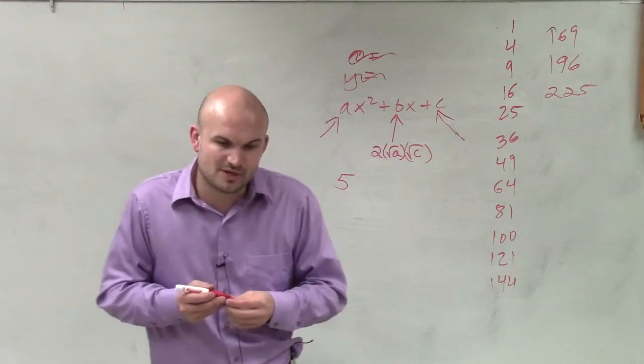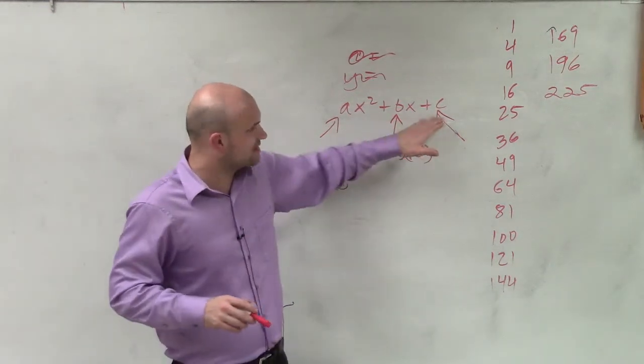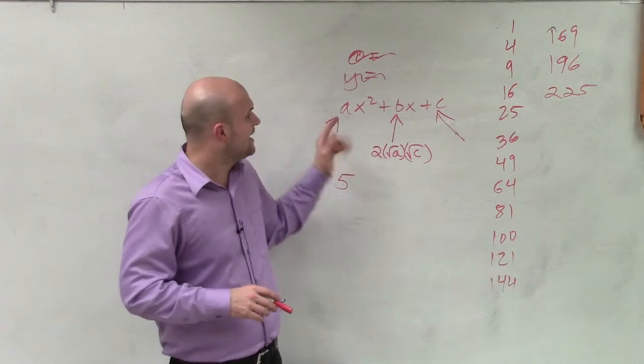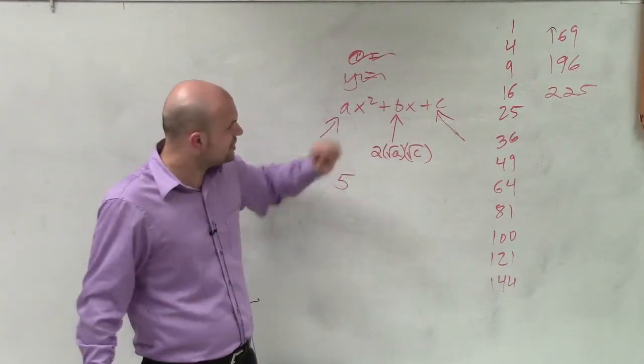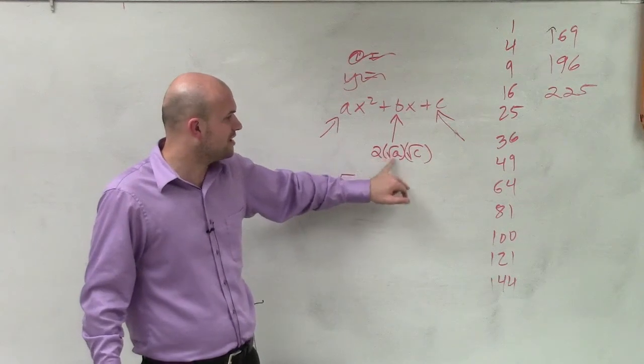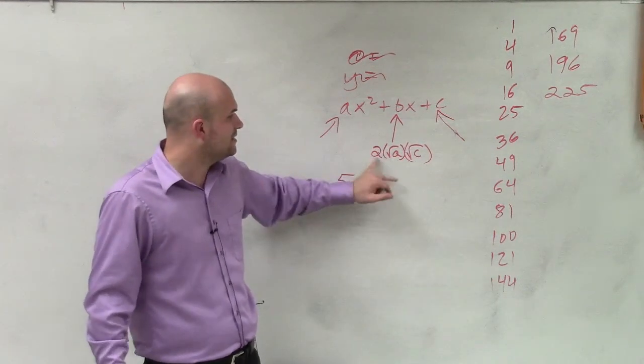So when identifying a perfect square trinomial, it's important that one, it's going to be taking shape of this quadratic, and that our a and our c are going to be perfect squares, as well as our middle term is going to be the square root of a times the square root of c times 2.